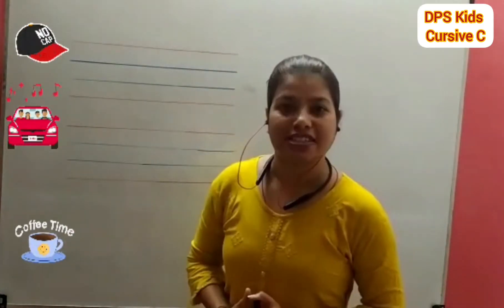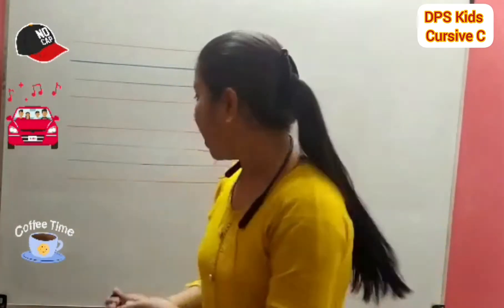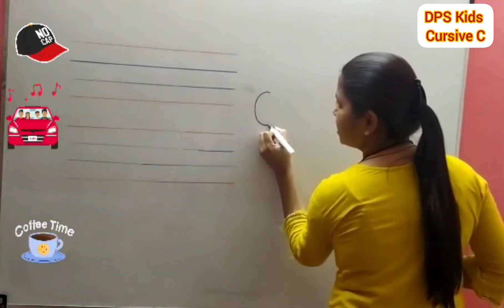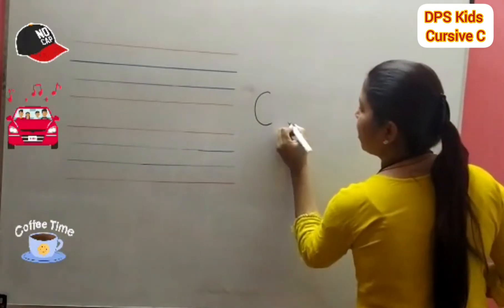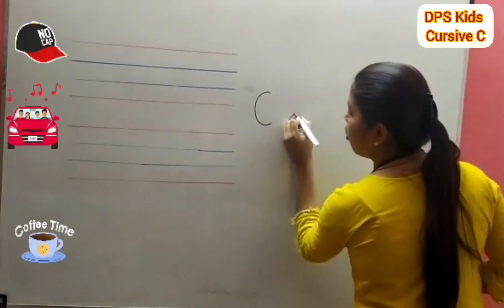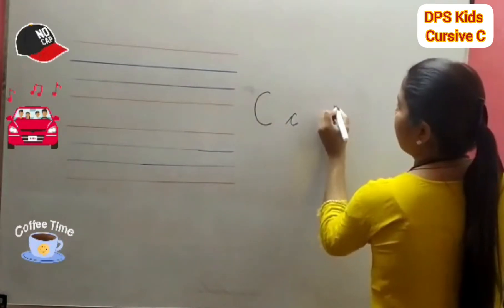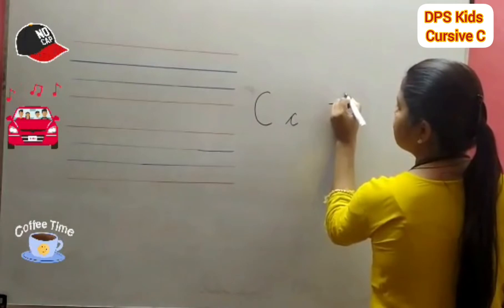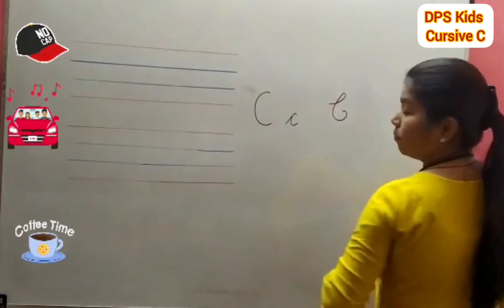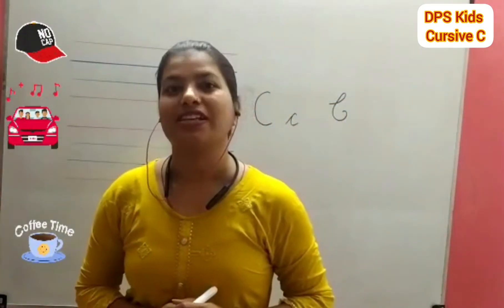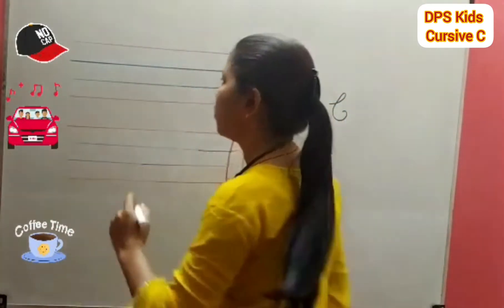C is C. This is capital C. This is small C. And this is capital C, and today we will see how to write capital C.